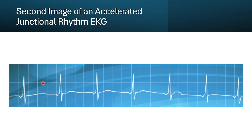Here's another image of an accelerated junctional rhythm. We can see an inversion of the P wave on every beat. The QRS complex is less than 0.12 seconds, the PR interval is less than 0.2 seconds, and the QRSs match with the QRSs. The P waves match with the P waves and are falling in line with each other.